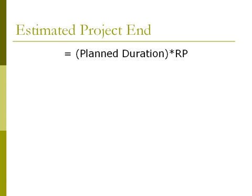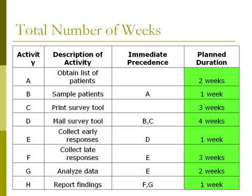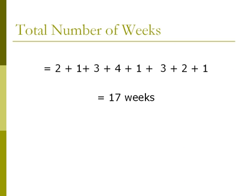Another piece of information useful for the project manager is to estimate the project end. This is found by multiplying the planned duration by the rate of performance. We just determined that the rate of performance is two, so we now must find the planned duration of the project. The planned duration is found by taking the total number of weeks of the project and subtracting the total number of weeks not on the critical path. The total number of planned weeks is the sum of the weeks listed in the column highlighted in green, which is 17 weeks.